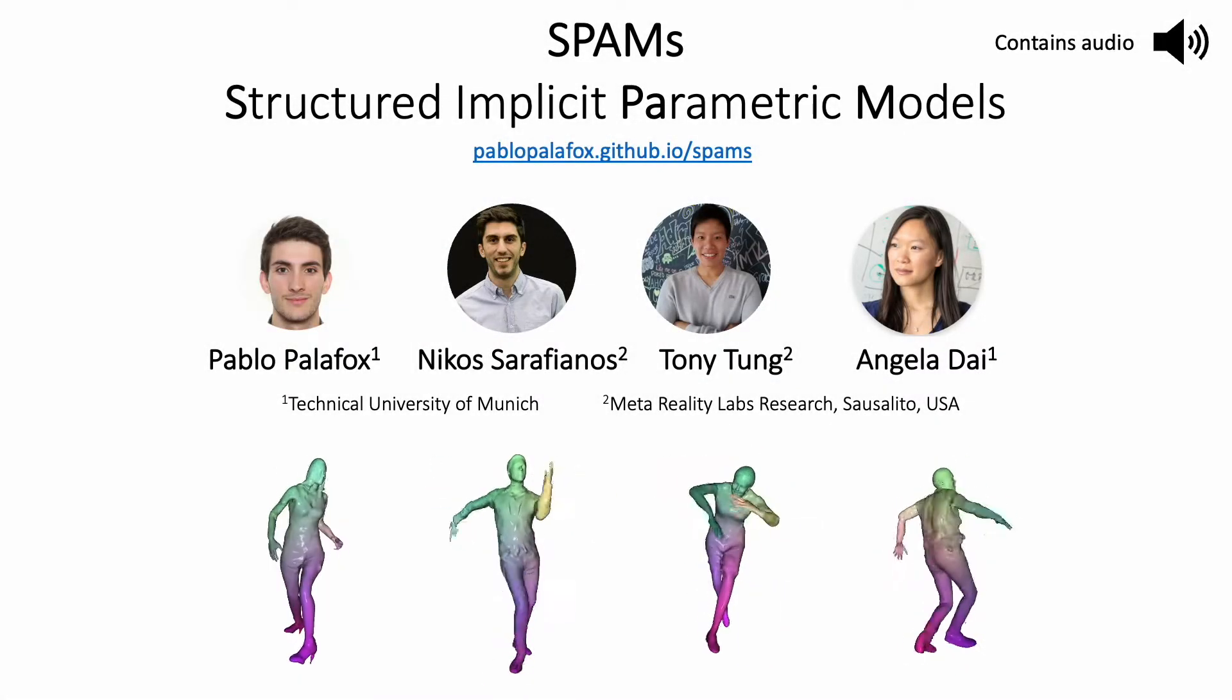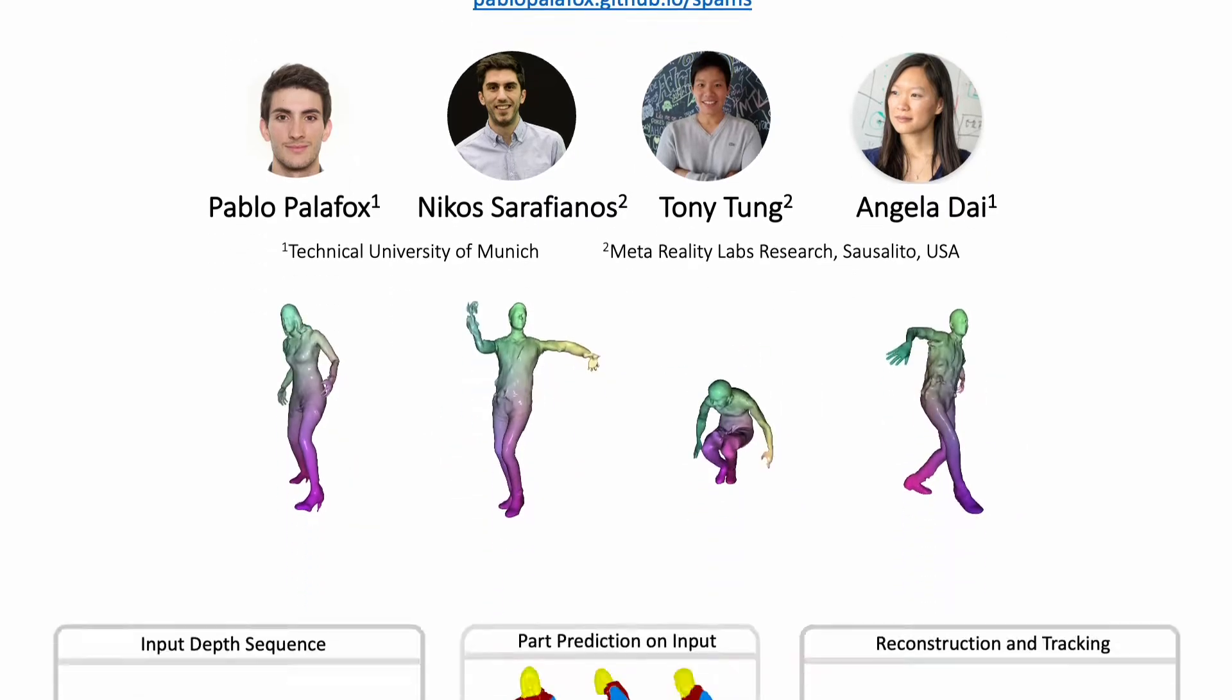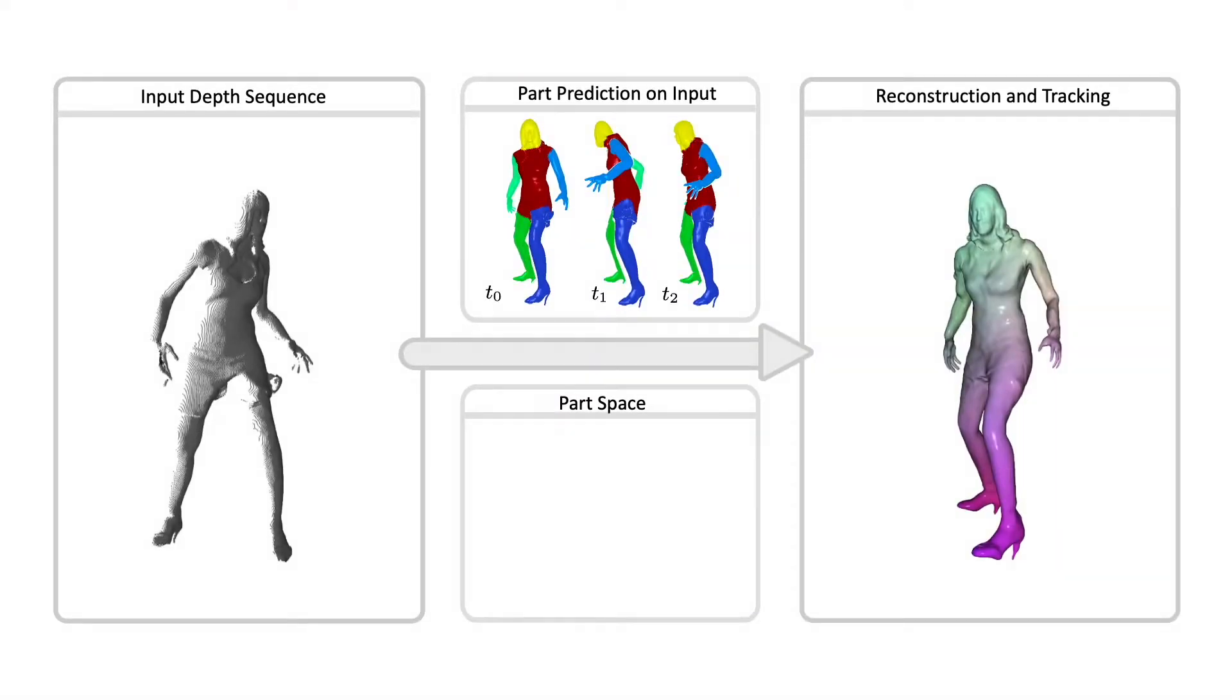We present SPAMS, Structured Implicit Parametric Models. SPAMS are a deformable object representation that structurally decompose non-rigid object motion into part-based disentangled representations of shape and pose.